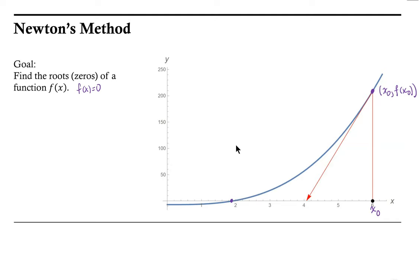Now let's consider the tangent line to the curve — you can imagine it continuing on both directions. The tangent line to the curve at the point (x naught, f of x naught) would be: y equals f prime at x naught times (x minus x naught) plus f at x naught.